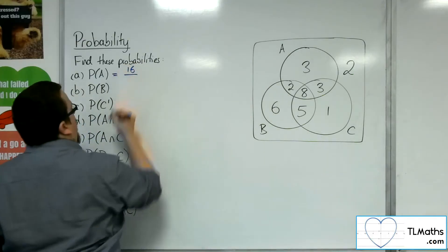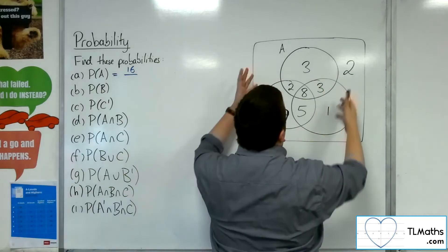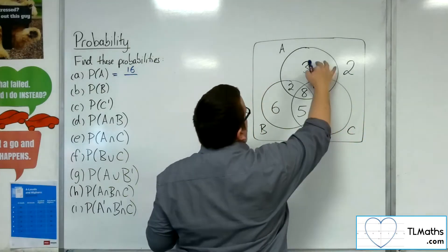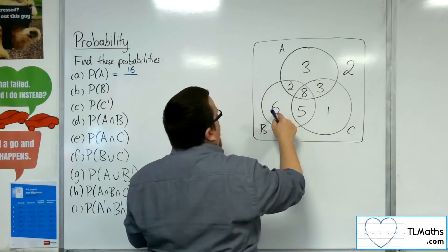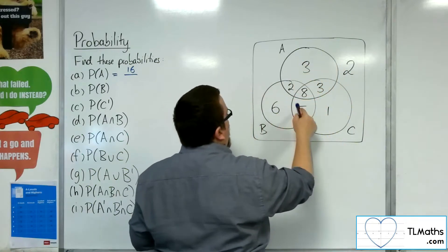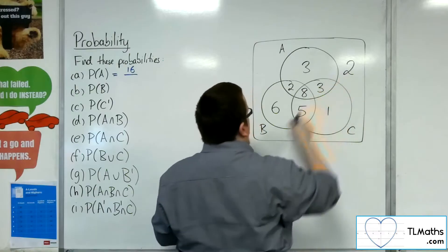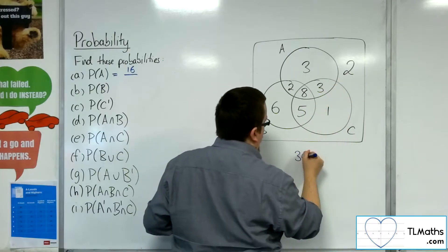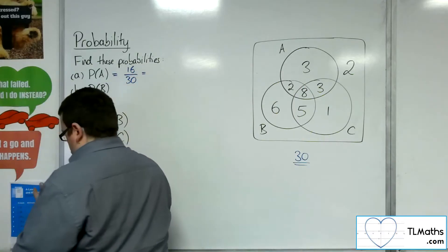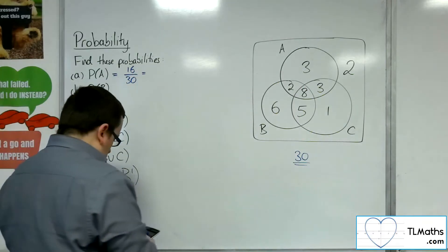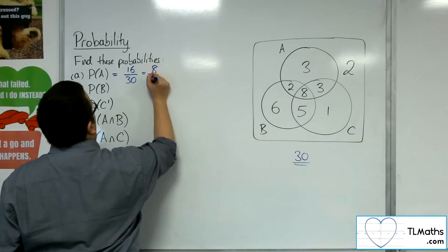What is it out of? I need to add up all of these numbers that are inside in order to work out the total. So I know that that's 16, then I've got an extra 6, so 22, 27, 28, 30. So it's out of 30 — 16 out of 30, which reduces to 8 fifteenths.